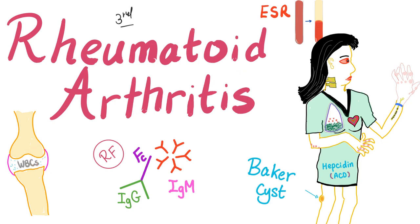Rheumatoid arthritis — inflammatory arthritis, chronic. You have autoantibodies such as the rheumatoid factor, which is an antibody against an antibody: IgM against the FC portion of IgG. ESR is high, CRP is high, IL-13 is high, platelet count is high. Baker cyst, anemia of chronic disease, rheumatoid nodules, involvement of the MCP and PIP. You have carpal tunnel syndrome, carditis, especially pericarditis, basal pulmonary fibrosis, and rheumatoid nodules in the lung.